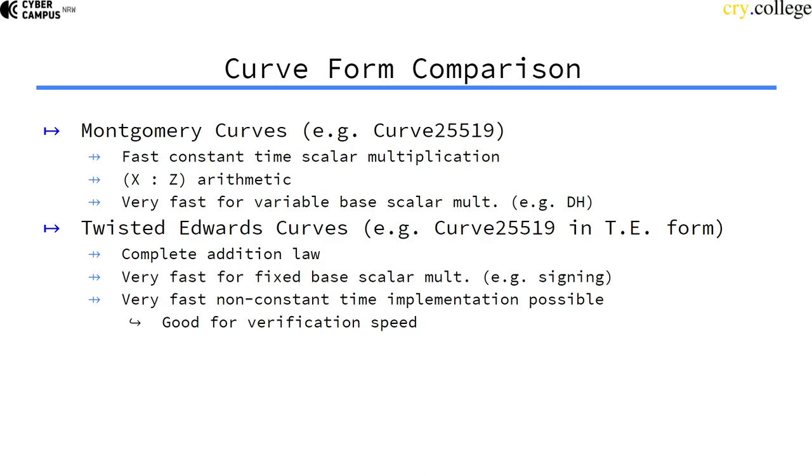We can actually do some pretty fast non-constant time implementations with Edwards curves. Now, we never want non-constant time implementations because then we get side channel leaks again—we can maybe via timing identify secret scalars. But we can use non-constant time code in verification because in verification we exclusively use public information, so we don't worry about side channels.